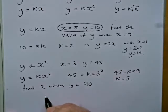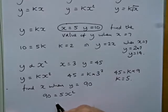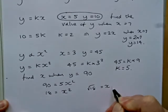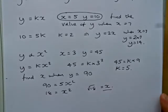Then we would have 90 equals 5x squared. So then we'd have 90 divided by 5. So 18 equals x squared. And then we'd have the square root of 18 would equal our x value.